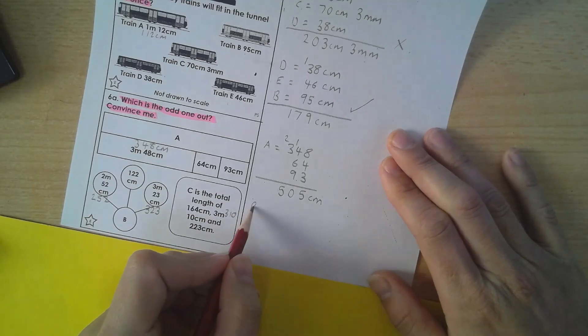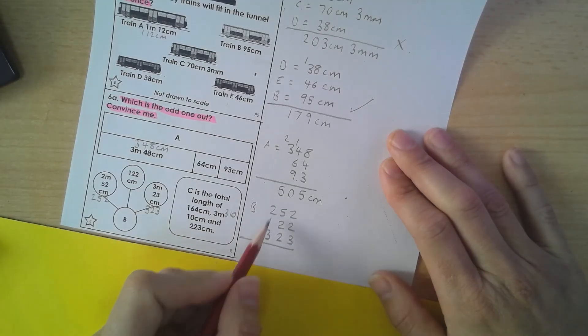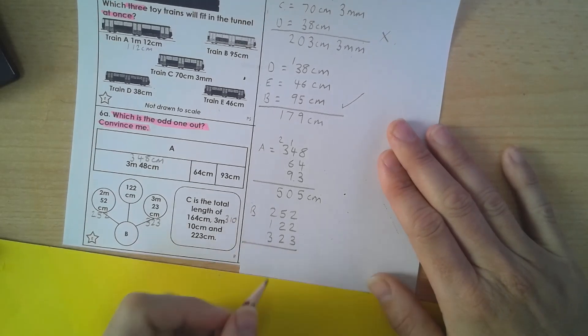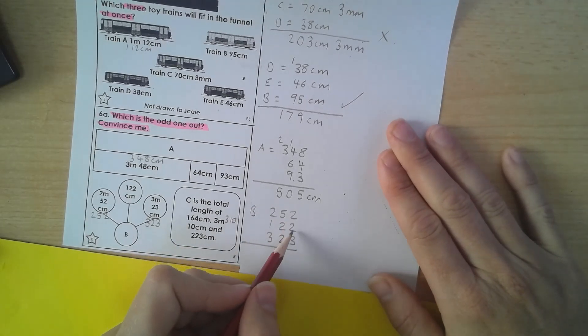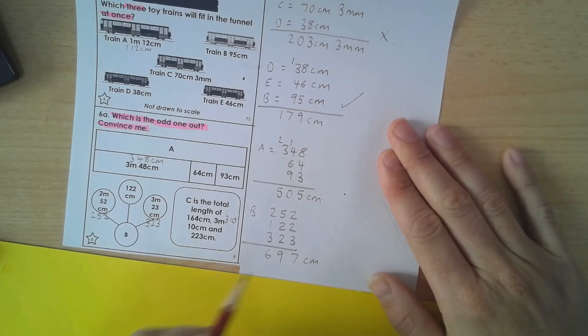So B is 252, 122, and 323. Now, already looking at this, I can see that it's going to be bigger, which is going to be over 6 metres, so let's have a look. 2 and 2 is 4, that's 3, 7, nothing to carry. 5, 6, 7, 8, 9, again nothing to carry. And 3 and 3 is 6, that's 697 centimetres.